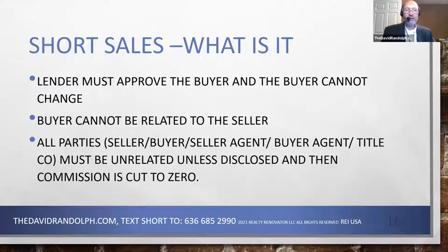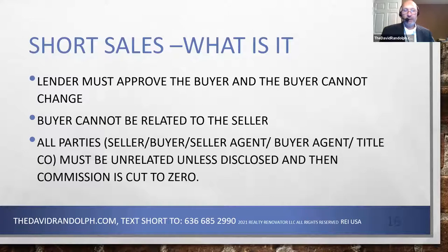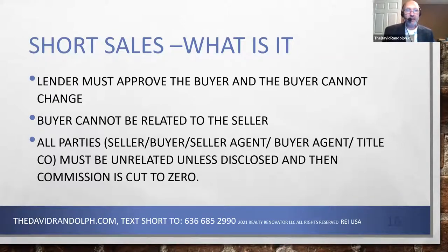The buyer can't be related to the seller — in fact, the seller cannot be related to anybody in the transaction: not the title company, not the buyer's agent, not the seller's agent. Nobody can be related to the seller. If there's a case where they are related — for example, if the realtor is the buyer of the house — they'll cut the commission to zero. If you're the buyer and you are the realtor with the listing, you're not going to get your 6% commission.